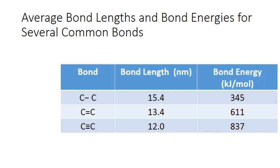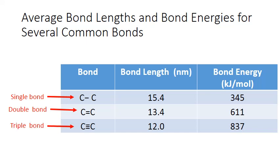Here are some average bond lengths and bond energies for several different types of carbon-carbon bonds. Covalently bonded atoms can share one, two, or three pairs of electrons between them. One shared pair results in a single bond, represented by a single dash. Two shared pairs is a double bond, represented by a double dash. And three shared pairs is a triple bond, as indicated by the triple dash.